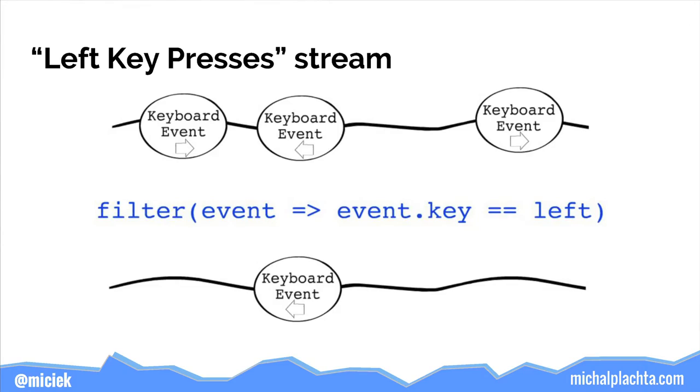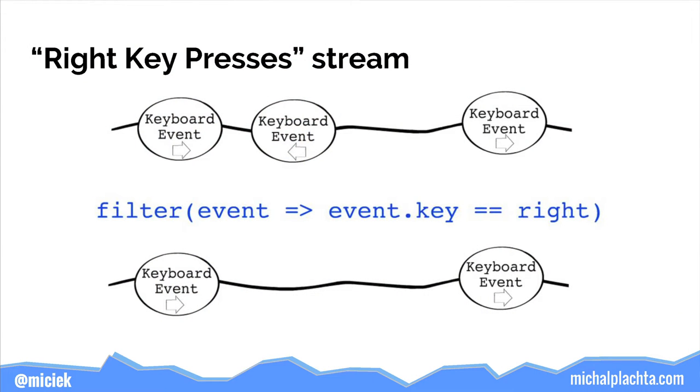The left key presses stream filters out all key presses that are not the left key, leaving just left key presses. Each time the user presses the left key, a value appears in that stream. Similarly, we can do this for right key presses. We then map over left key presses so that each value is mapped to a rotate-left function, giving us a stream of functions — the left rotation stream.